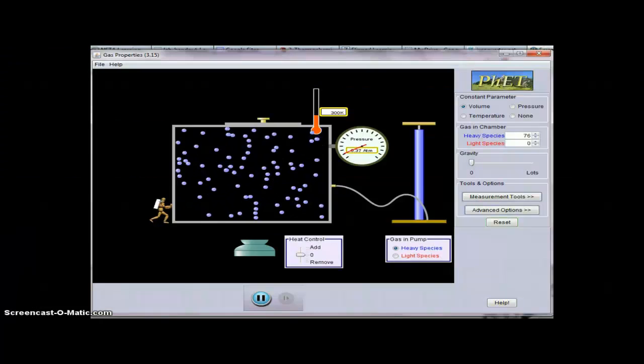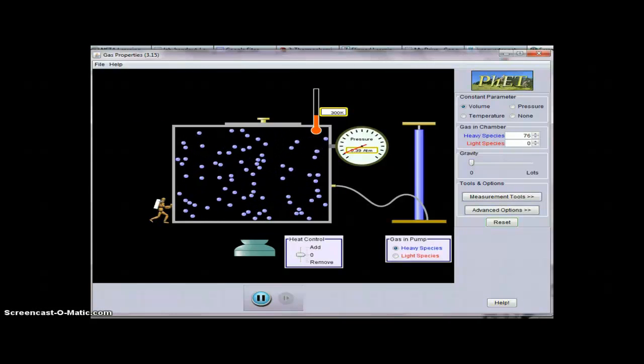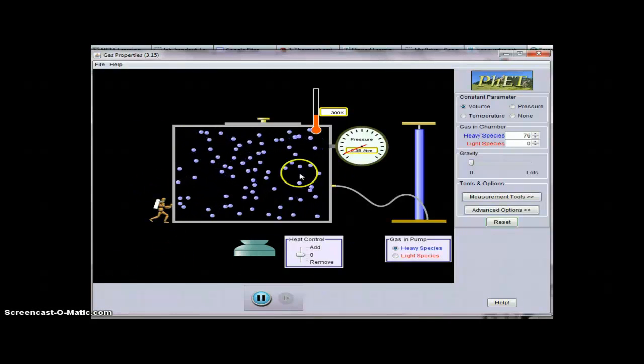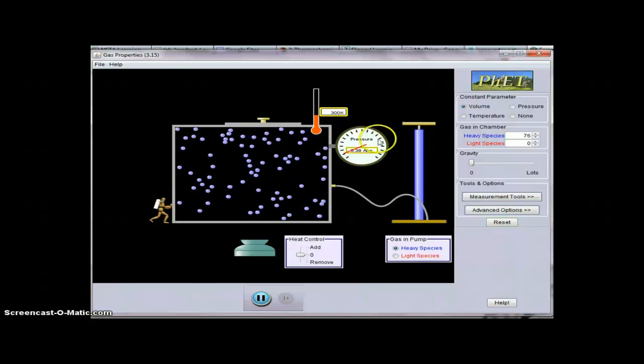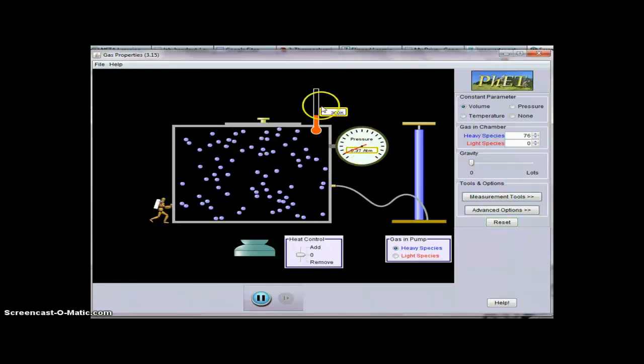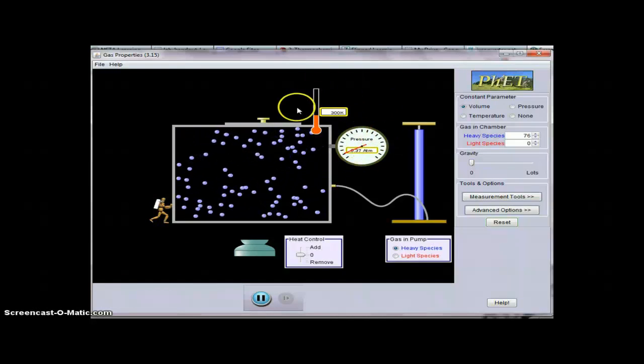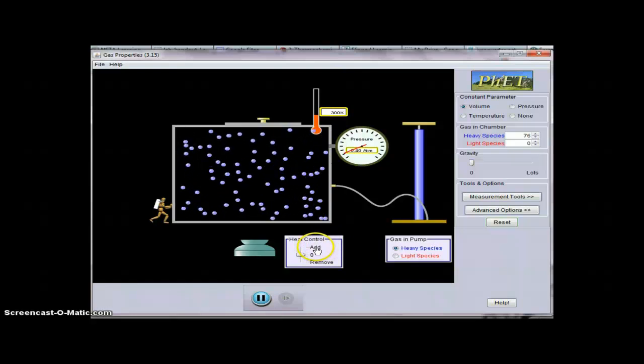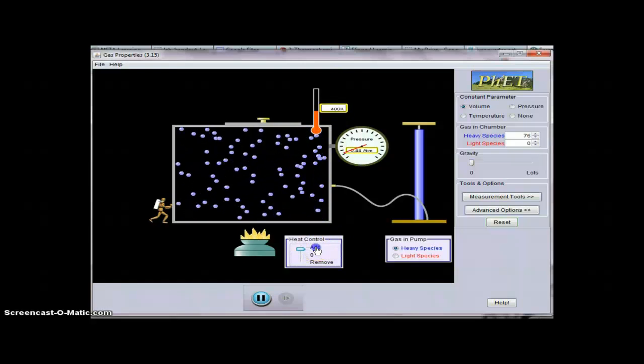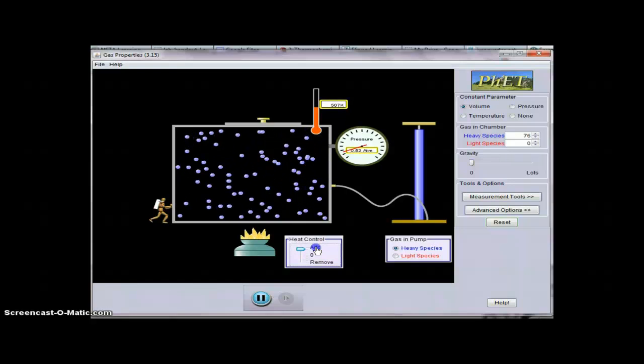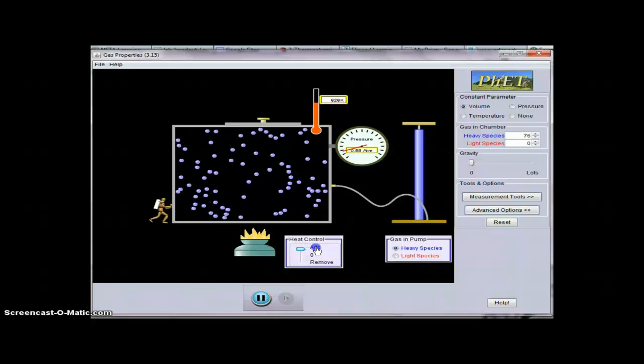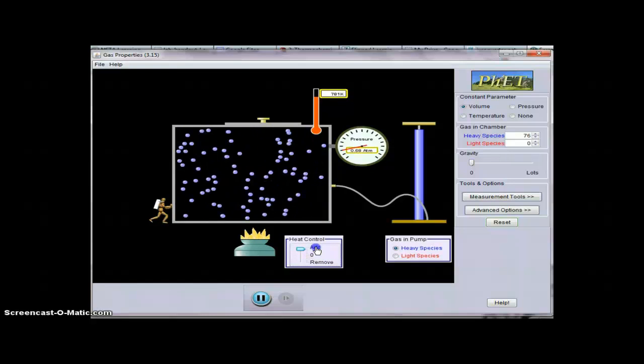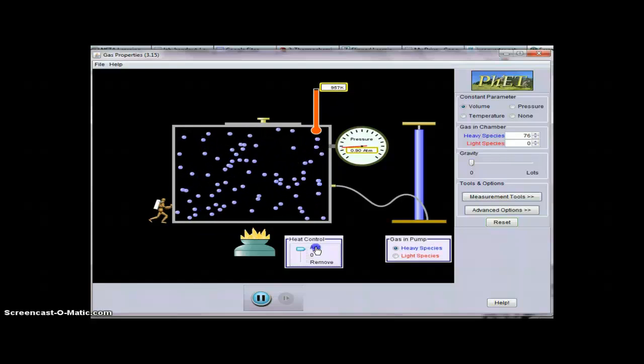Here we can see a molecular level representation of Gay-Lussac's law. We see that we have gas particles in a box, and here's the pressure sensor and the temperature sensor. I'm going to increase the temperature by adding heat, and you see that there's a direct correlation with the pressure. The pressure goes up just as the temperature goes up, so they're directly correlated.